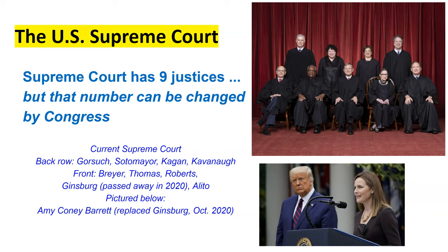Ruth Bader Ginsburg was appointed by President Bill Clinton in 1993-94. She was one of the longest serving justices behind Clarence Thomas, but she passed away in October and Amy Coney Barrett was nominated by President Trump and approved by the Senate to fill her seat. The last one on the front row is Sam Alito, who is in Sandra Day O'Connor's old seat. When Rehnquist passed away, Roberts was nominated to Chief Justice, and Sam Alito was appointed by George W. Bush — Bush 43 — to fill that seat.